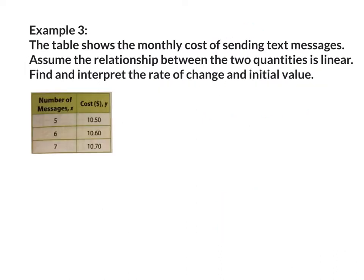Example number 3. The table shows the monthly cost of sending text messages. Assume the relationship between the two quantities is linear. Find and interpret the rate of change and the initial value. The rate of change is a slope. I'm going to use the formula m equals y sub 2 minus y sub 1 all over x sub 2 minus x sub 1.